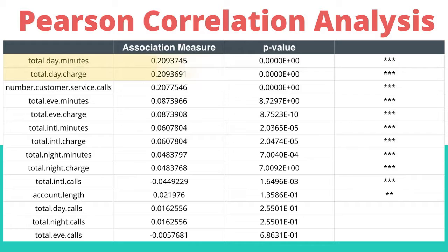If we look at the top two most associated variables to churn, there are total day minutes and total day charges. If we logically think about it, I would assume that the amount a person is charged on their phone bill for daytime calls would be directly related to how many minutes they talk during the day.